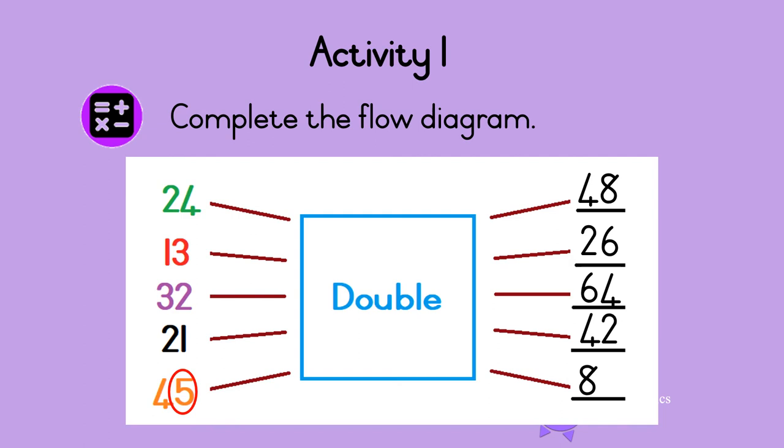So we add 1 to 8 in the 10s column. And the answer is 90. So double 45 is 90. Well done!